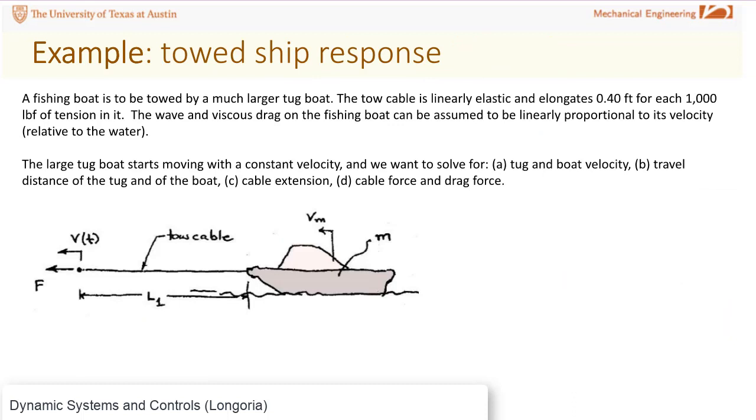Let's look at this example problem. I'm going to give a description of the problem statement and show you how it ends up being a second order system. We have a fishing boat that's being pulled by a large tugboat, so the tugboat is specifying this velocity.